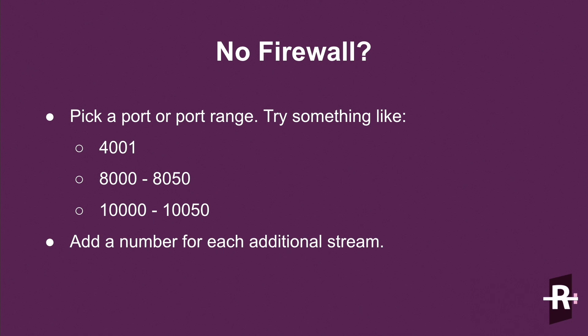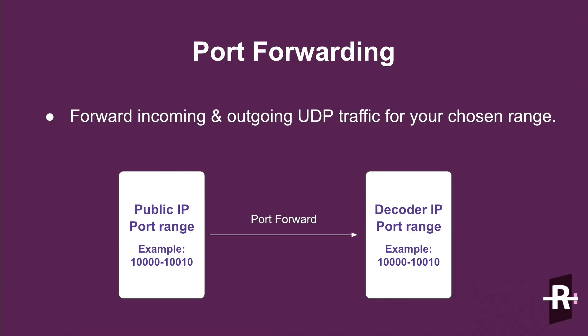It's important to note that for every subsequent stream you need to go up a number. Pick the number you start with and count up from there. For example, if my first stream was 10,001, I would go 10,002, 10,003, and so on — because, and this is important, you can only have one SRT stream incoming or outgoing per port.